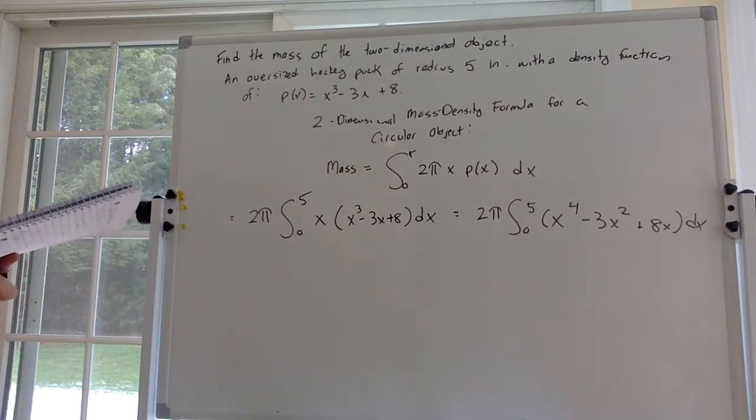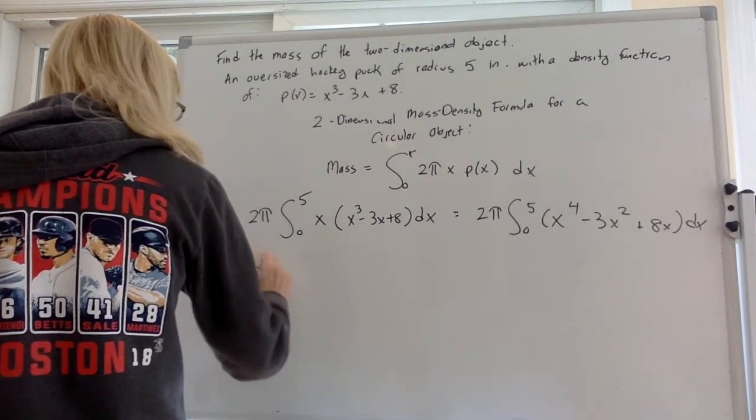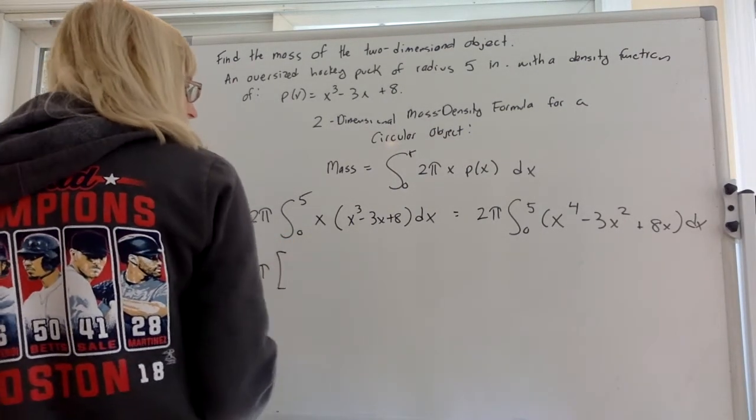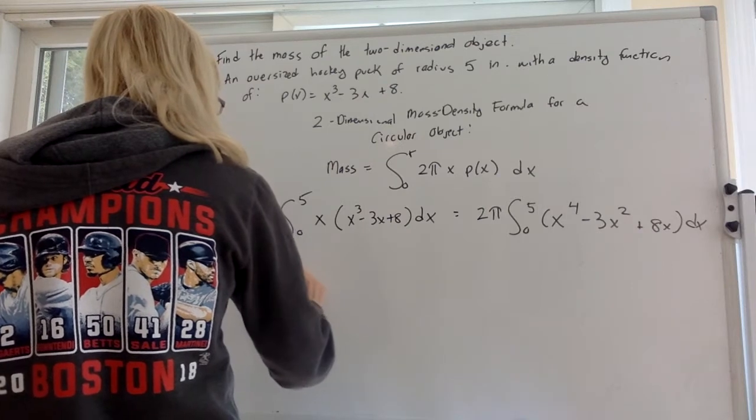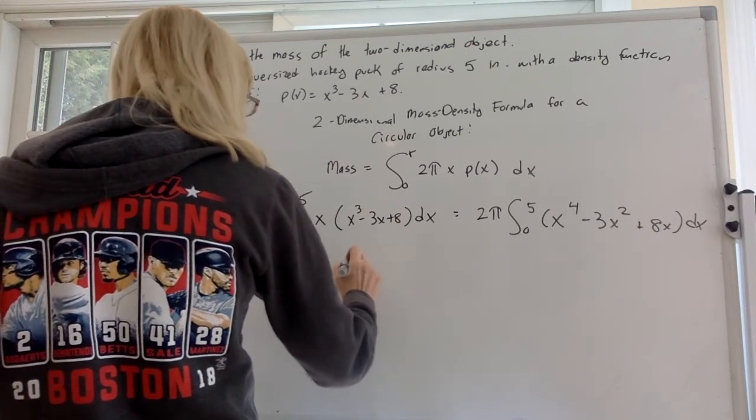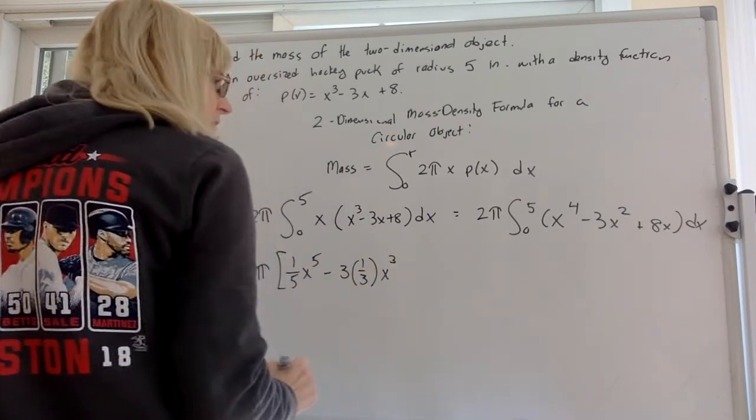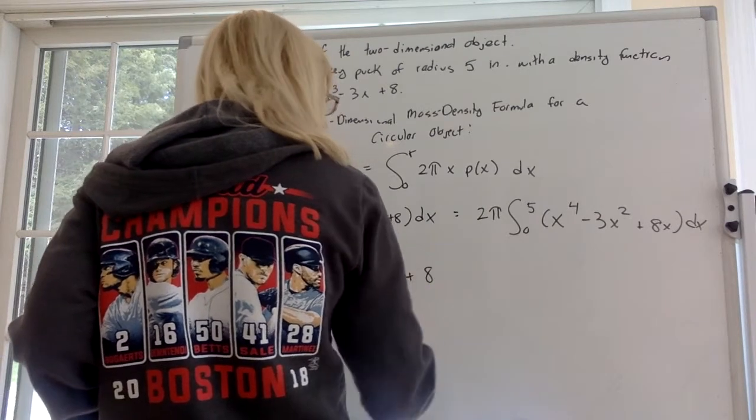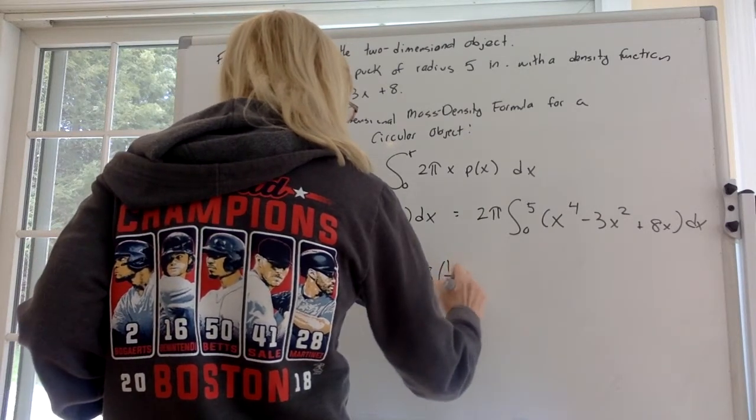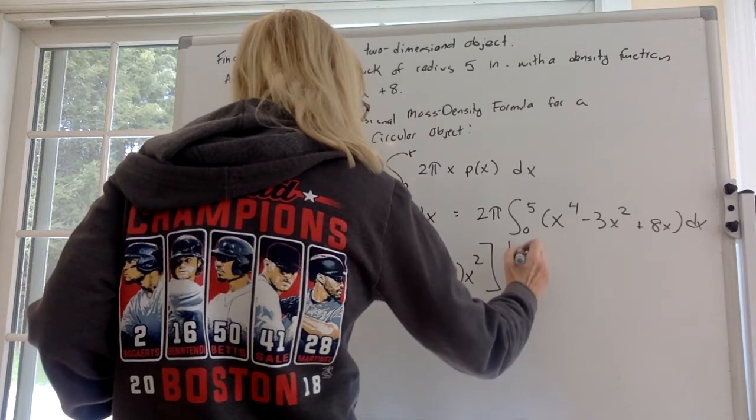Now it's just a case of taking antiderivatives for each term. What's the antiderivative of x to the 4th? One-fifth x to the 5th minus 3 times, what's the antiderivative of x squared? One-third x cubed plus, what's the antiderivative of x? One-half x squared between 0 and 5.